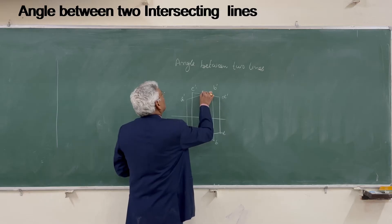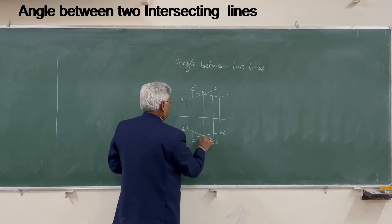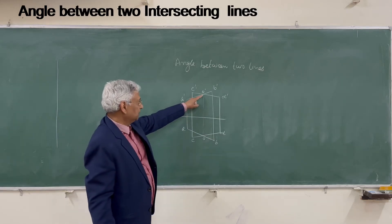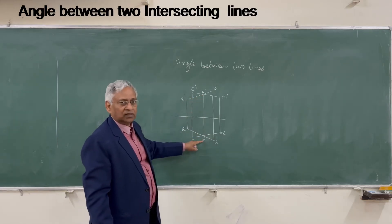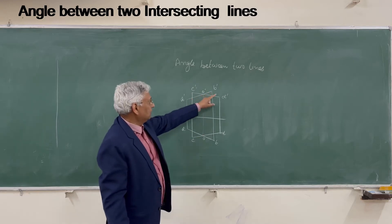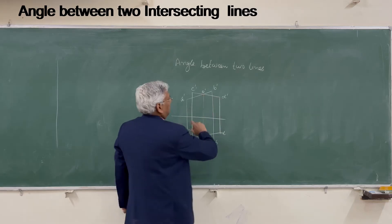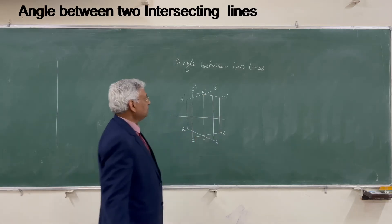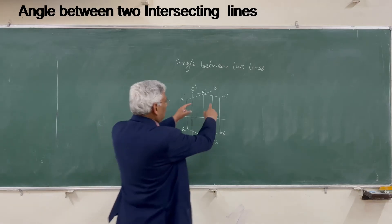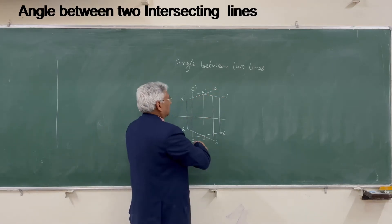If you take the series O, O-dash and O — where the intersection of elevation is O-dash and the projector on the plan is O — then the true angle between lines O-dash B-dash and O-dash D-dash can be found by determining the true length of the three sides of triangle OBD.